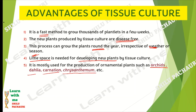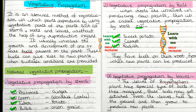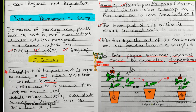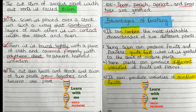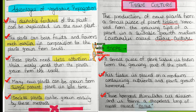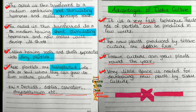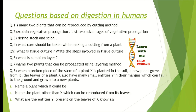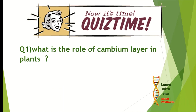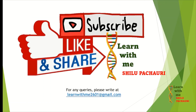These are the notes of vegetative propagation — you can pause the video and take a screenshot. These notes also cover tissue culture, steps involved in tissue culture, and its advantages. Previous year questions are also shown. Now for the quiz: what is the role of the cambium layer in plants? Answer in the comment section. If you liked the video, please like, share, and subscribe so you don't miss upcoming videos. Goodbye, take care!